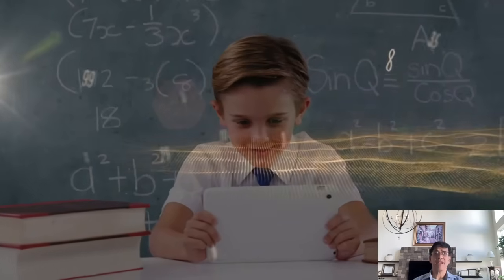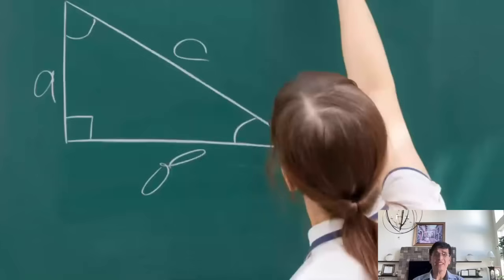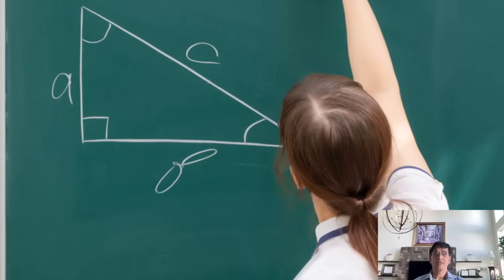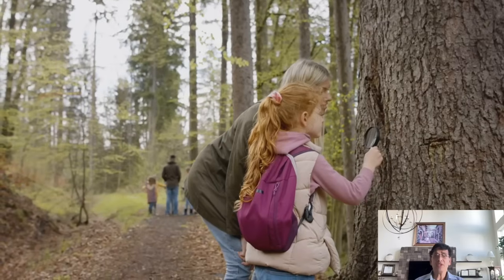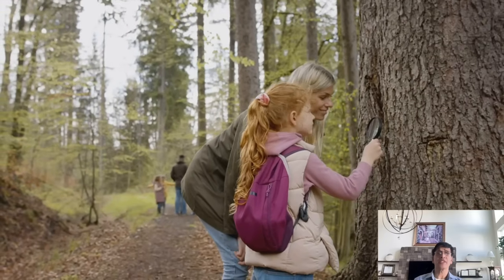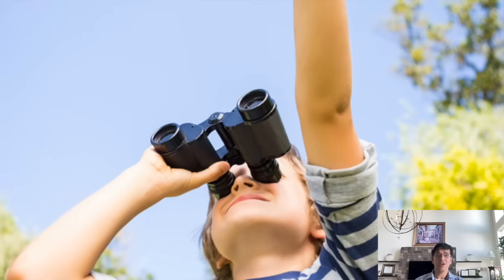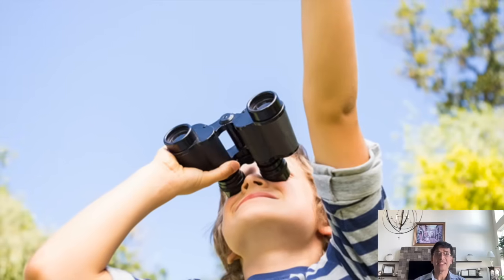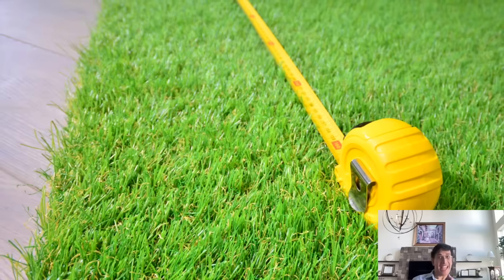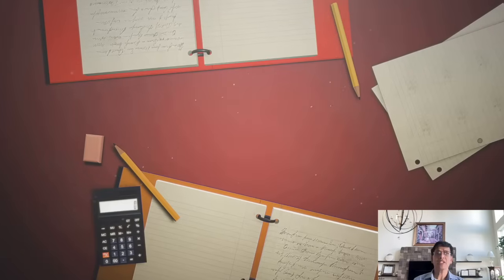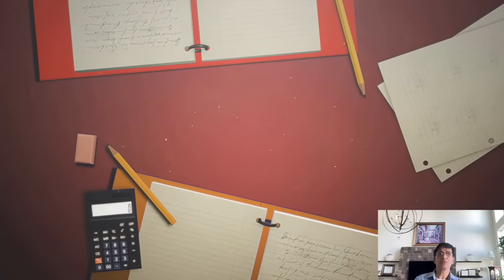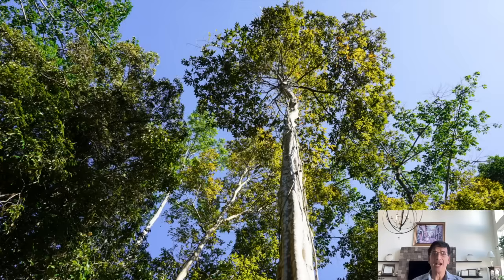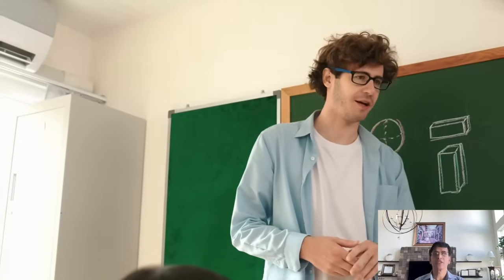Students must see math alive in their world. It shouldn't be like, here is trigonometry. But it should be like, how can we measure the height of that tall tree without climbing on it? We go outside, use a clinometer app to measure the angle of elevation, measure our distance from the tree, and boom. Using tangent equals height over distance, we find the tree's height.